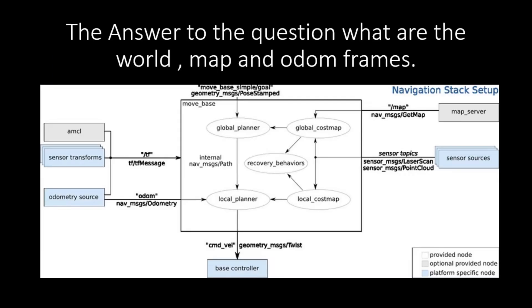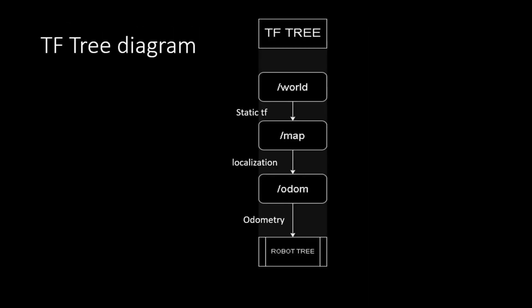Now let's answer the question, what is the difference between world, map and odom frames? What you see on the screen are the components of a standard ROS navigation stack. Mapping, localization and odometry are the components which help us understand where the robot is in the world. Here is the TF tree of a simulated robot. The frame of the base of the robot is base link.